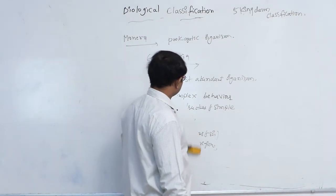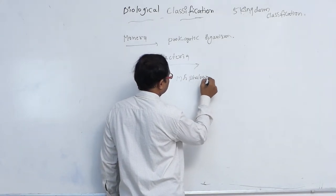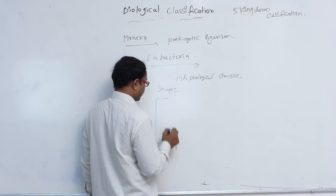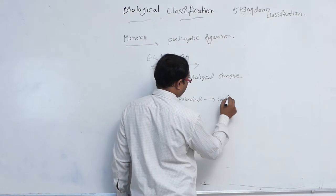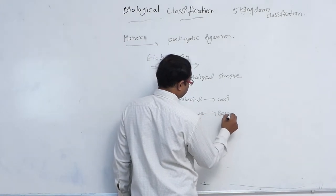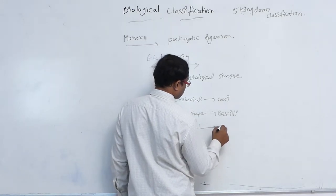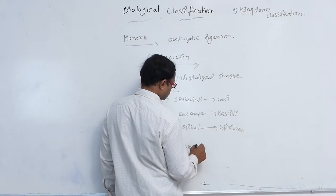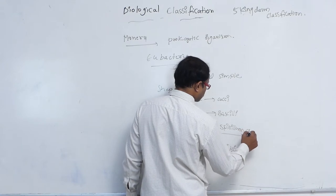Based on shape, bacteria are divided into four categories. First, spherical shape bacteria are known as cocci. Second, rod shape bacteria are known as bacilli. Third, spiral bacteria are known as spirillum. Fourth, comma shaped bacteria are known as vibrio. Spirillum bacteria are also known as spirochetes.